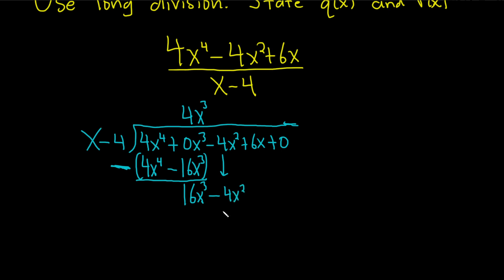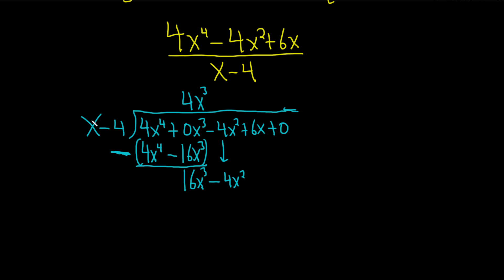Then you start the process again. You ask the question, what do you multiply by x in order to get 16x cubed? Well, 16x squared. So you put it here above the x squared term. Notice how I'm lining them all up. Makes it much better. Then you perform the multiplication. 16x squared times x is 16x cubed. 16x squared times negative 4 is negative 64x squared. And I draw a line, I put a parenthesis, and I put a giant minus sign.